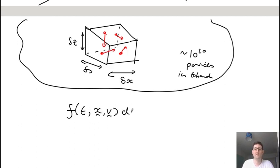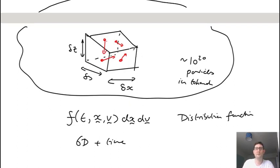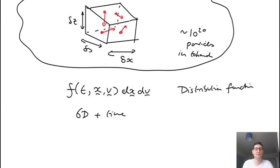We can write the number of particles with a given position in the box and a given velocity as a distribution function, so f(t, x, v). This quantity is the probability of finding a particle with a particular velocity and a particular position at a given time. We have six dimensions—three of space, three of velocity, plus time. This is a very difficult system to solve, either solving the particles themselves, 10 to 20, 10 to 21 particles, or evolving a six dimensional distribution function. This is the kinetic problem.